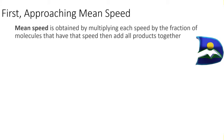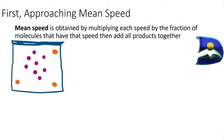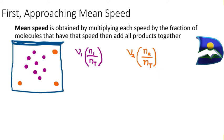Mean speed is obtained by multiplying each speed by the fraction of molecules that have that speed, then adding the products together. For example, the purple molecules share the same speed v₁, and the orange molecules share speed v₂. You multiply each velocity by the fraction of molecules that have that speed, then add the products together.